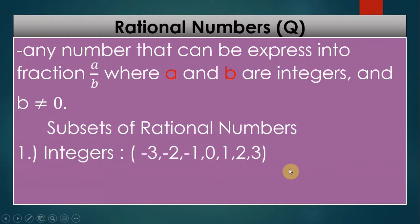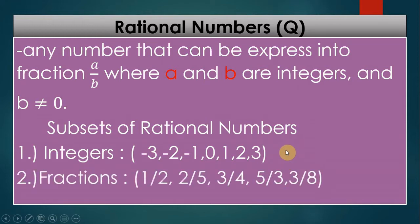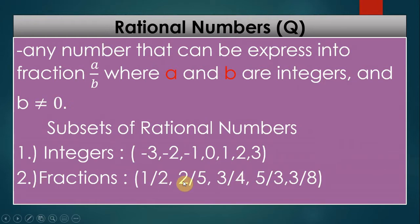The basic form of a fraction has a numerator and a denominator. The second subset of rational numbers is fractions — fraction itself is a rational number. Examples include one half, two fifth, three fourth, five over three, and three eighths.